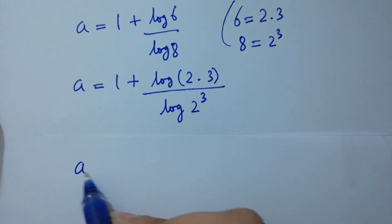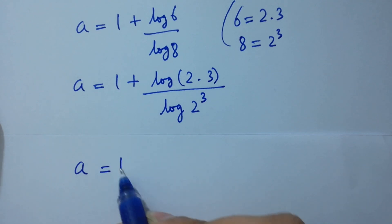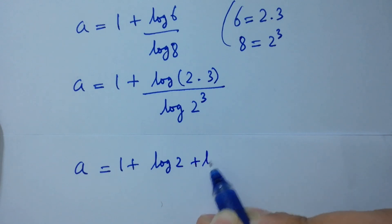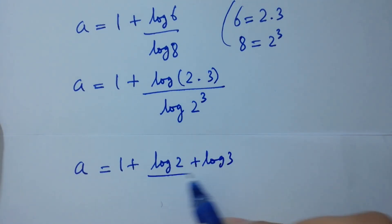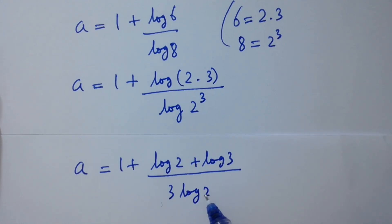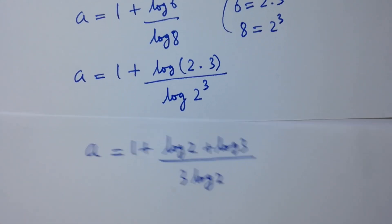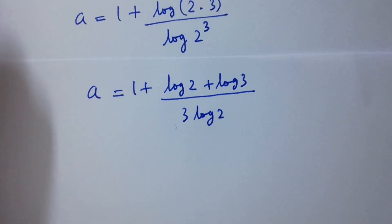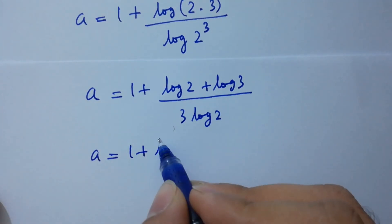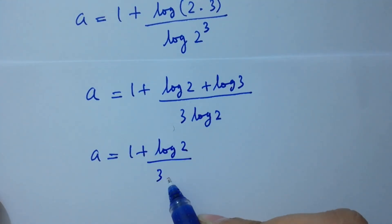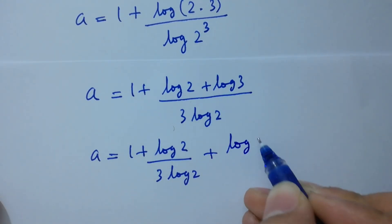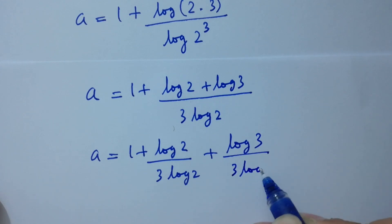Expanding, a equals 1 plus log 2 over 3 log 2 plus log 3 over 3 log 2.